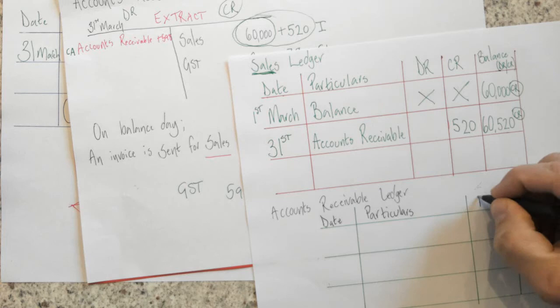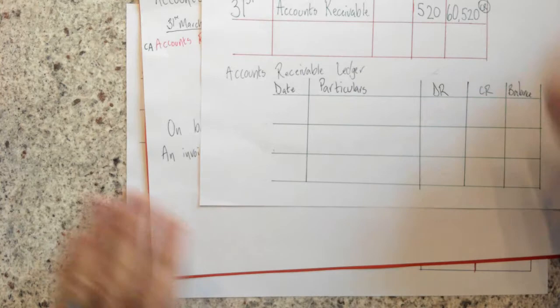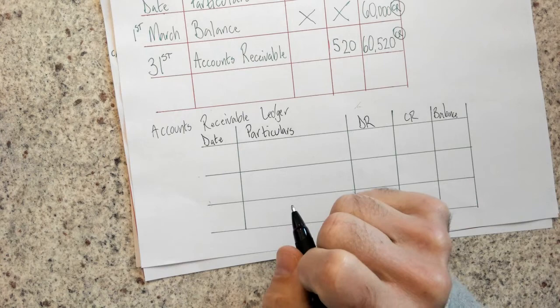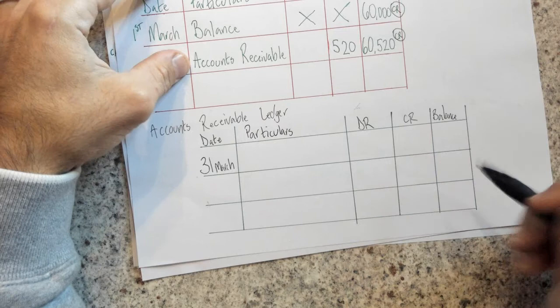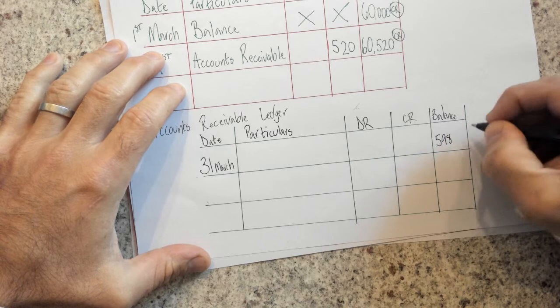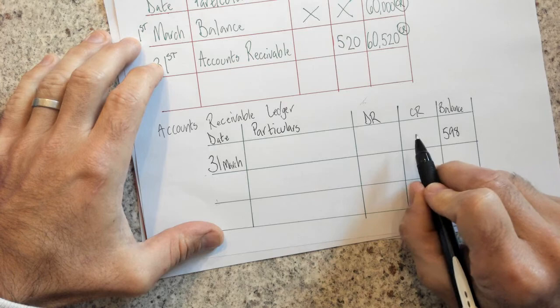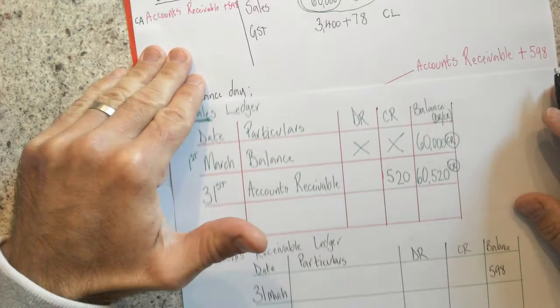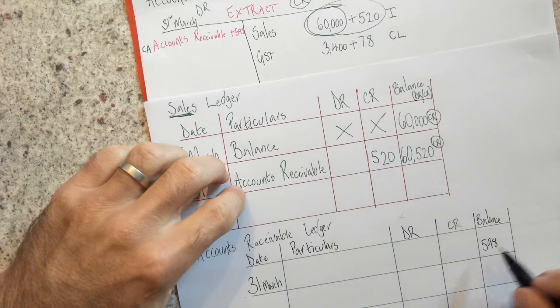So accounts receivable must go in here. And my sales has changed. And it's changed by 520. It's changed by 520 CR. And it's done that because it's over here. My sales is over here. But just remember this has got GST in it. So I need to use the 520 figure, which is here, not the total figure.